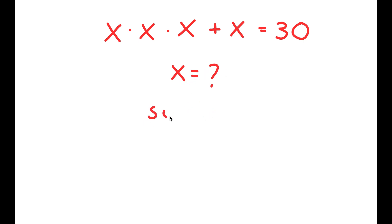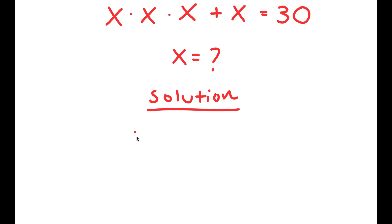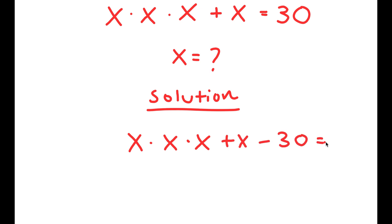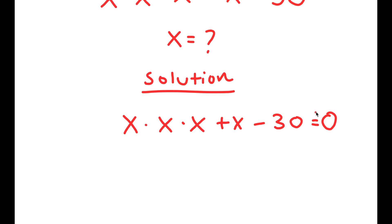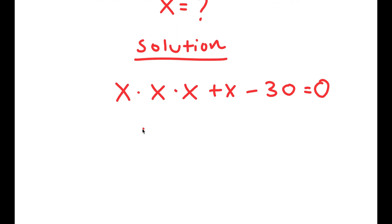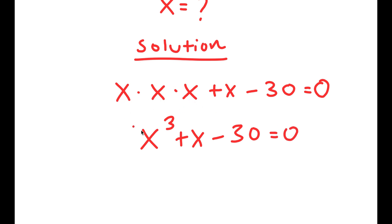For my solution, what I'm first going to do is start by subtracting 30 on both sides. So if I subtract 30 on both sides, I get x times x times x plus x minus 30 is equal to 0. From here, I can rewrite this as x to the power of 3 plus x minus 30 is equal to 0, because x times x times x is the same thing as x to the power of 3.